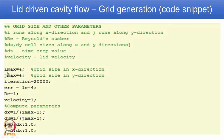We have defined imax = 4 — you can change it to any number — this is the grid size in the x direction. Similarly, for the y direction jmax = 4, this is the grid size in the y direction.